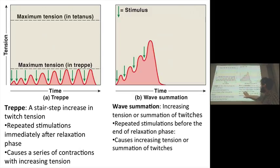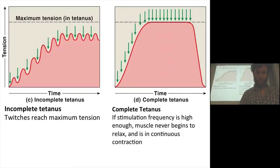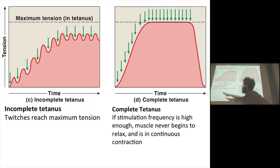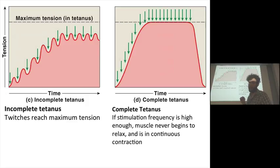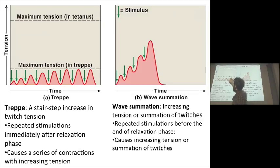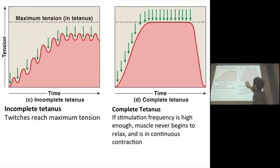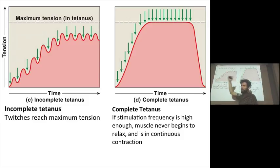Wave summation. Now, there is this level of incomplete tetanus. We're going through wave summation — a certain frequency of stimulation giving us the treppe — in wave summation until we reach a maximal level of tension given that frequency of neurologic stimulation. Incomplete tetanus is the maximum tension that muscle fiber can give you given this stimulation pattern.